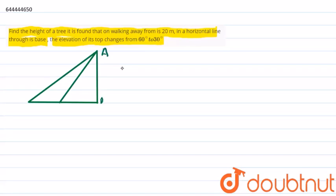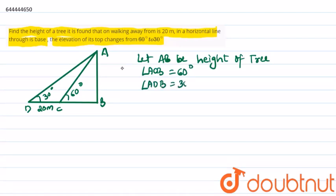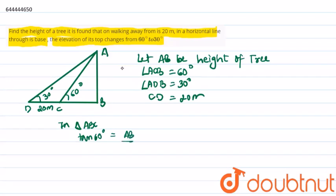Let AB be the height of the tree, and let us mark points C and D. The angle of elevation changes from 60 degrees to 30 degrees, and the distance traveled was 20 meters. Therefore, let AB be the height of the tree, angle ACB equal to 60 degrees, angle ADB equal to 30 degrees, and distance CD equal to 20 meters. Therefore, in triangle ABC, tan 60 degrees equals AB upon BC — opposite upon the base.